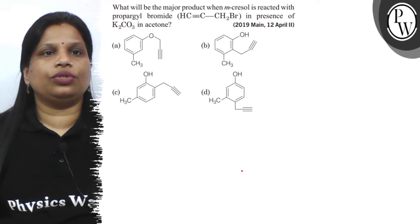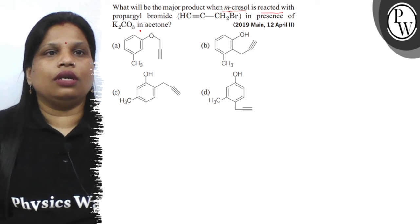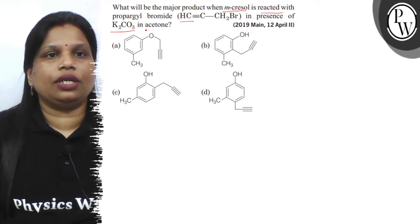Hello, let's read the question. The question says what will be the major product when metacresol is treated with propargyl bromide in presence of potassium carbonate in acetone.